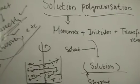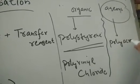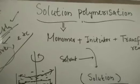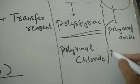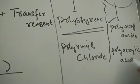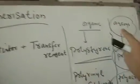For aqueous solvents where water is used, we can prepare polymers like polyacrylamide. So polyacrylamide is an example of a polymer prepared through solution polymerization using water as the solvent.